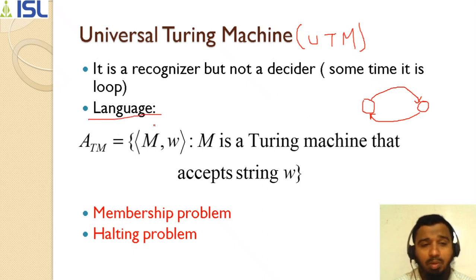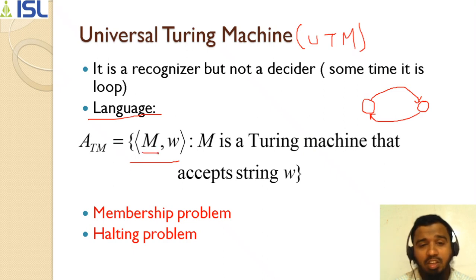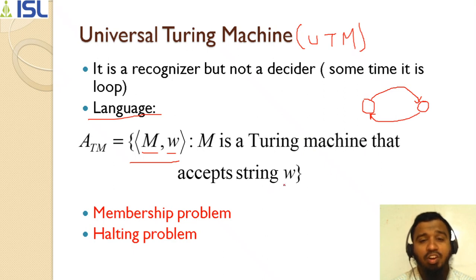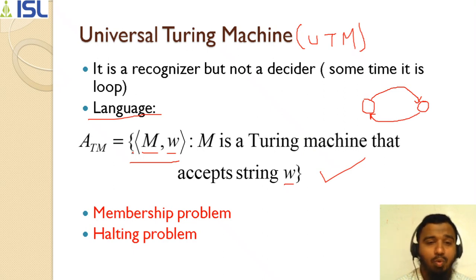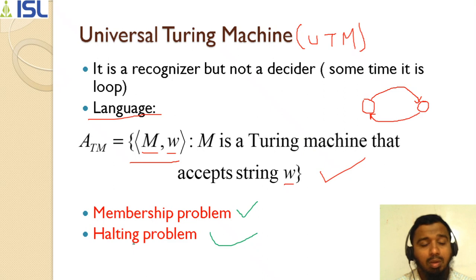What is the language for the universal Turing machine? It is A_TM, which we already covered in the last class. A_TM equals the set of pairs (M, w) where M is a Turing machine and w is a string such that M accepts w. This is the universal Turing machine. In the previous lecture you can see the two problems — membership problem and halting problem — were done with the help of the universal Turing machine.